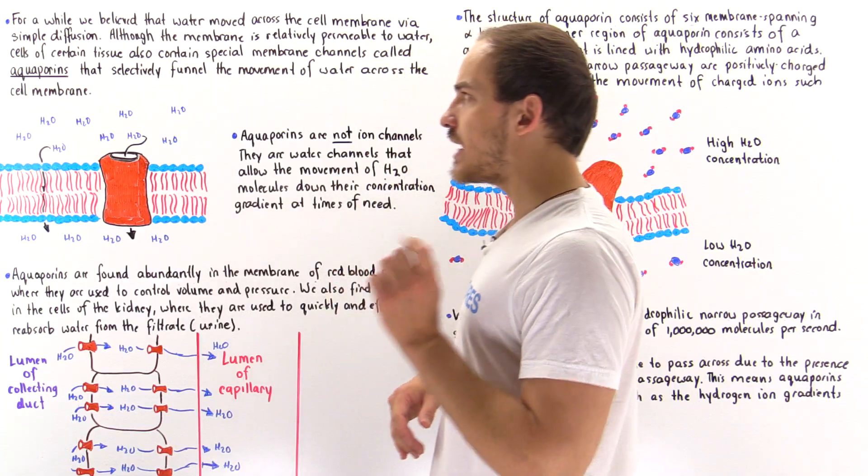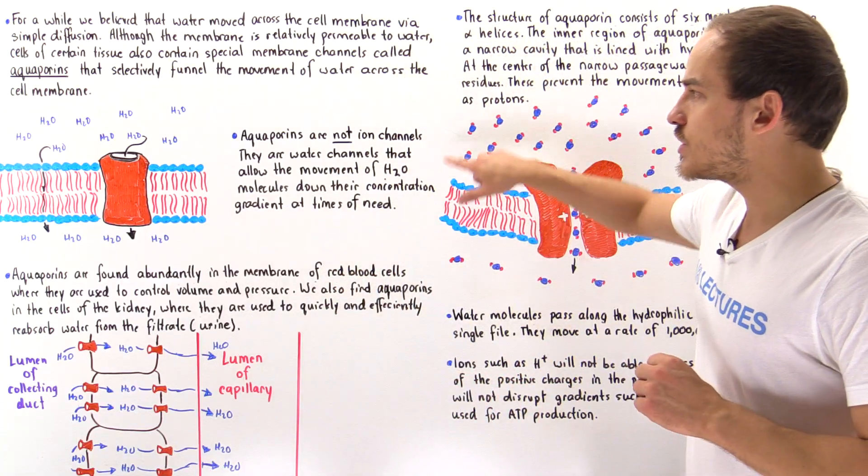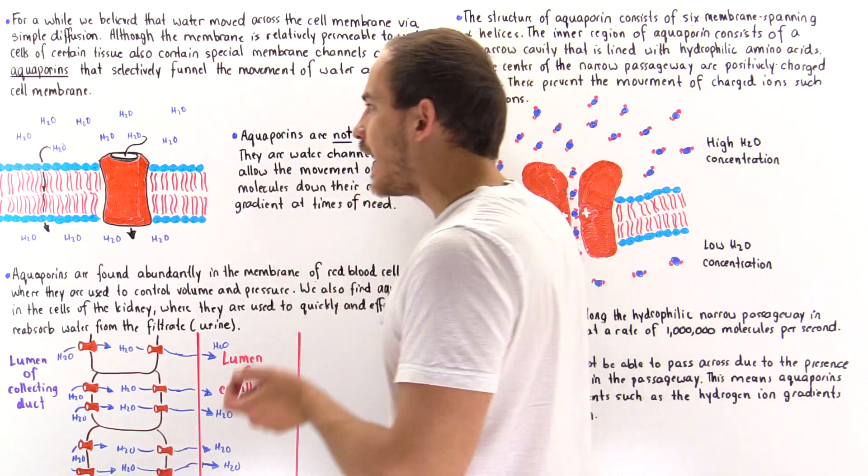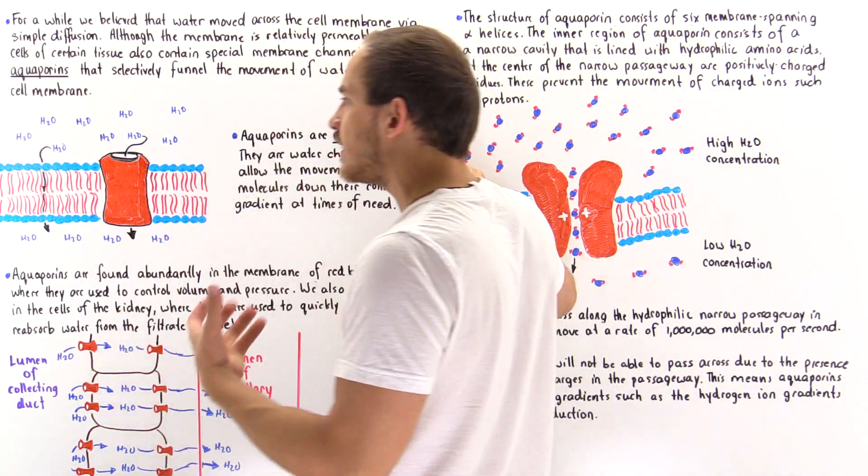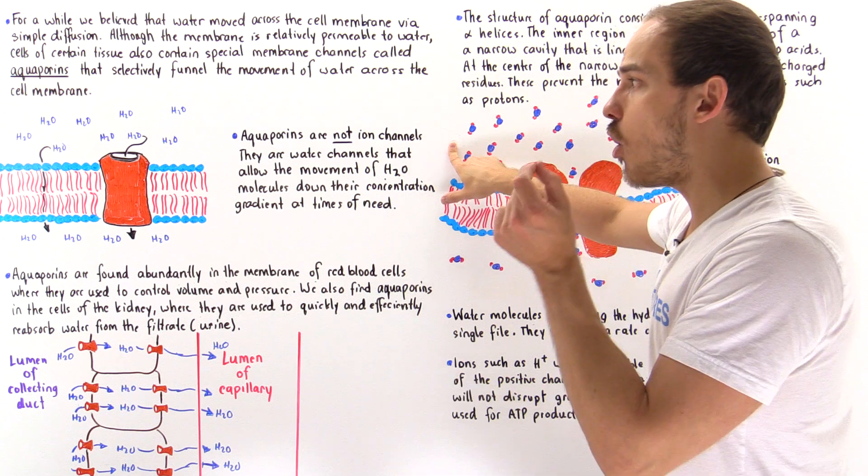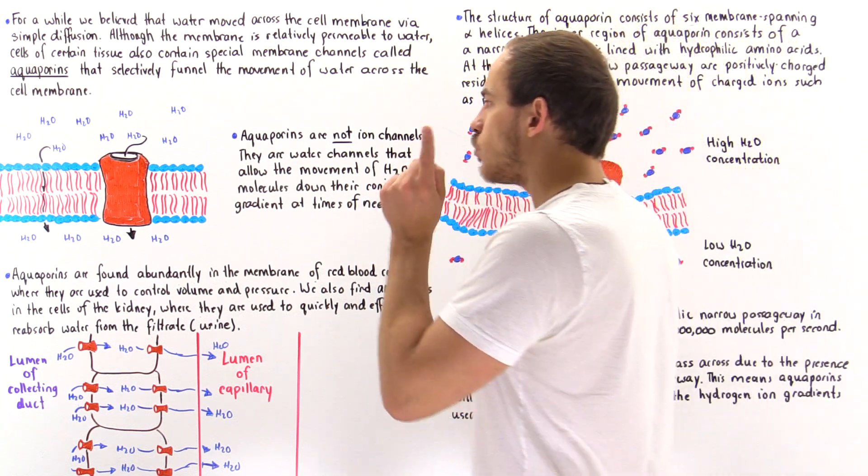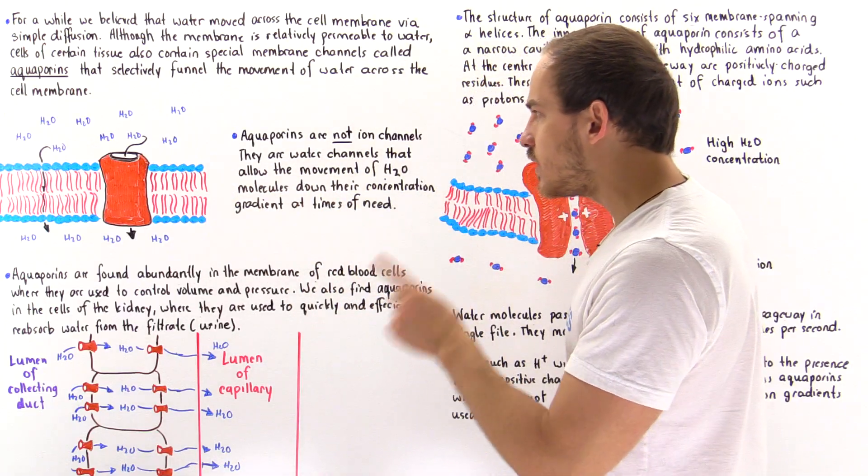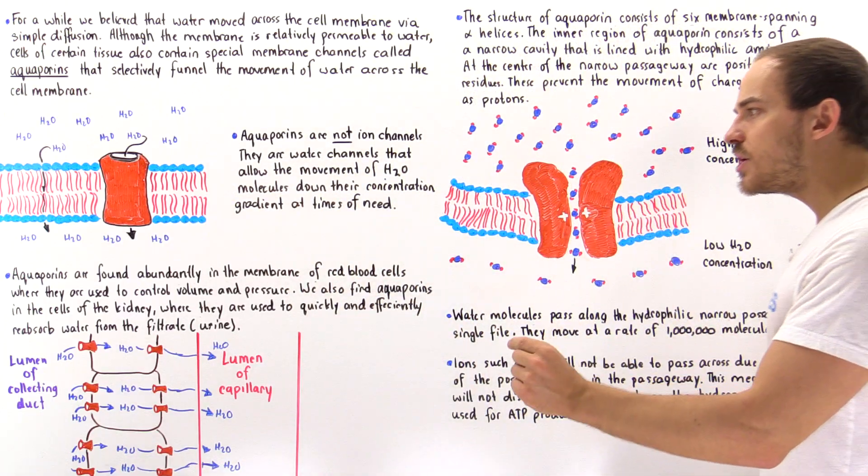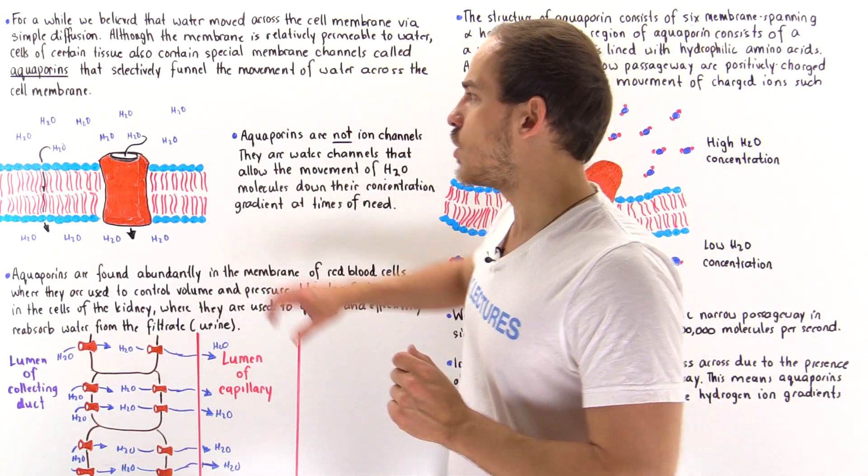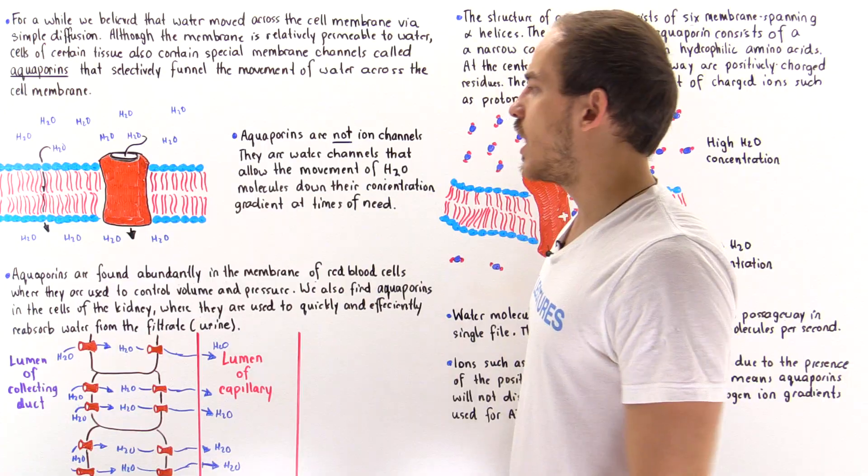It's important to note that aquaporins are not actually ion channels. What that means is they don't actually allow the movement of molecules that contain charge or ions. They only allow the movement of water molecules. So they're water channels that allow the movement of water molecules down their concentration gradient when the cell requires it, from a high to a low concentration.